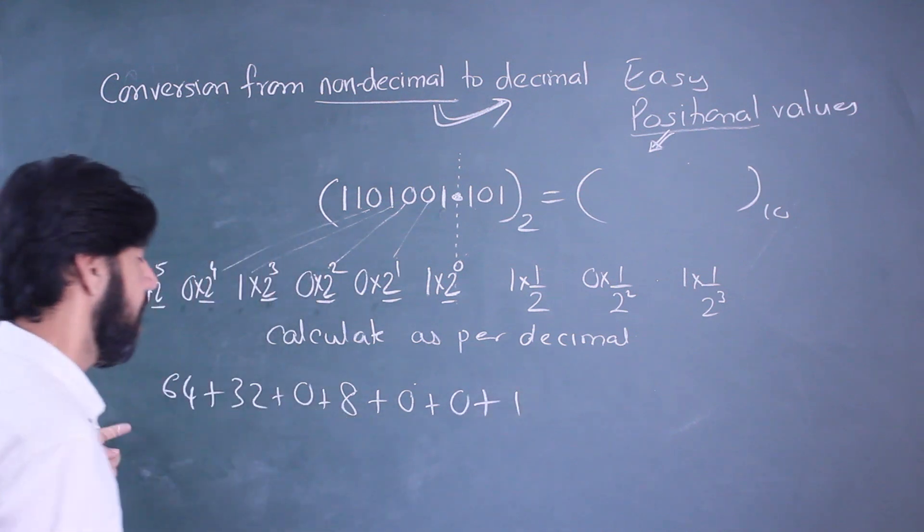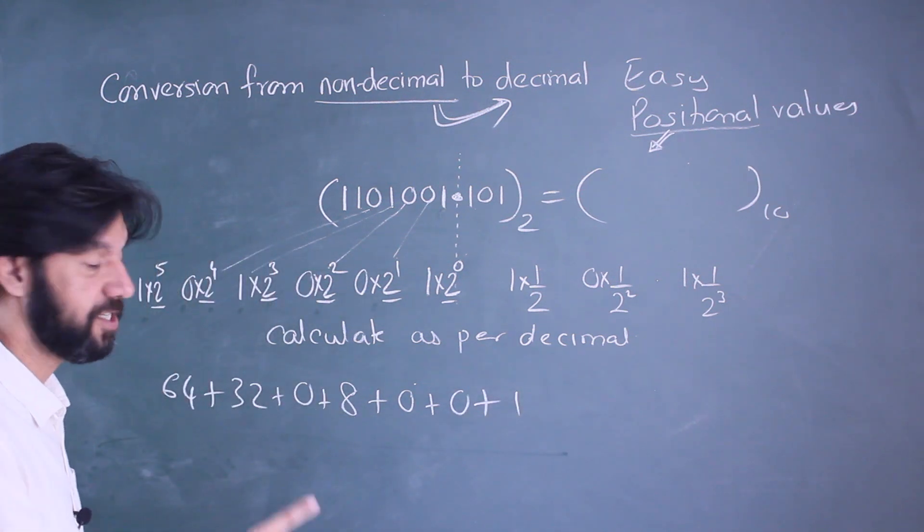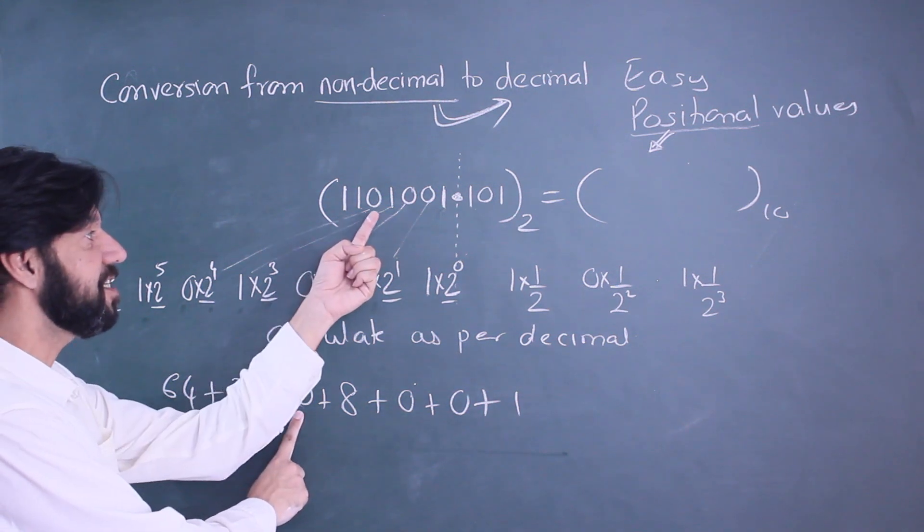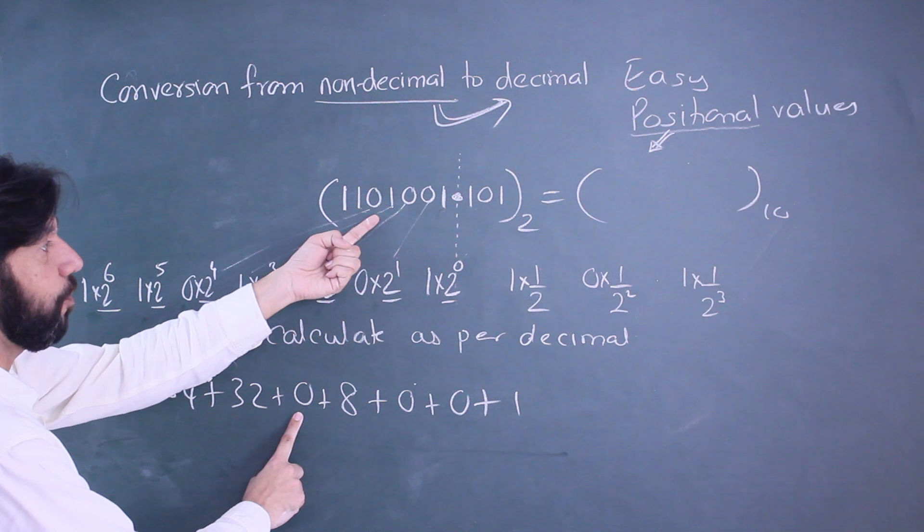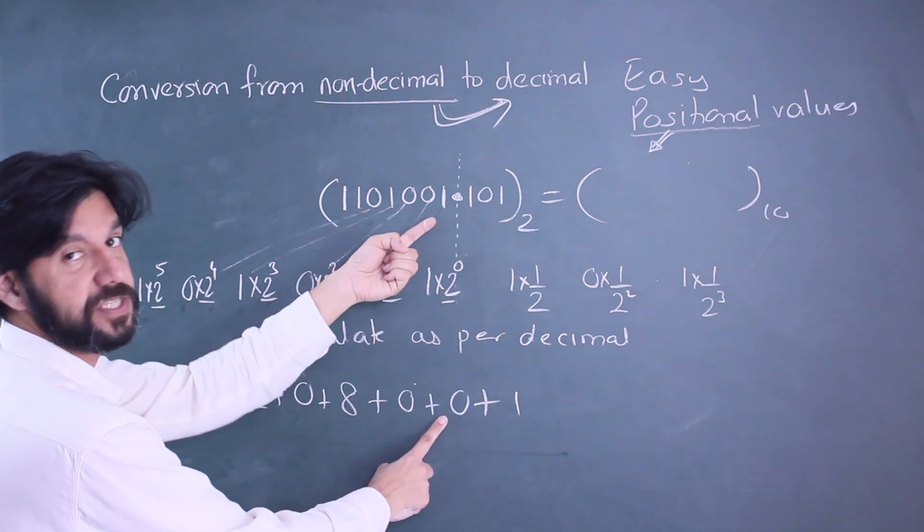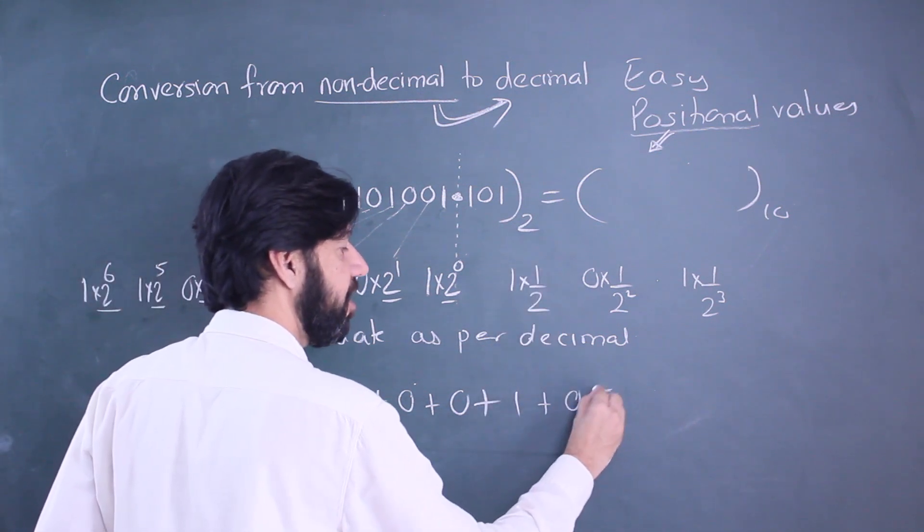Look here, we are talking about powers of two. Later on in a session it will help us. Sixty-four, thirty-two, sixteen. Sixteen is not present, it's a zero. Eight. After eight, four is not present. Two is not present. Two raised to one is present.